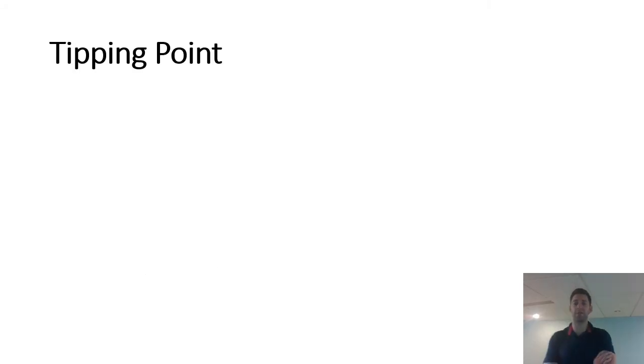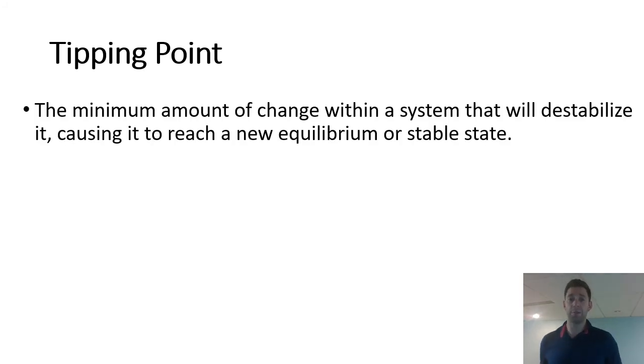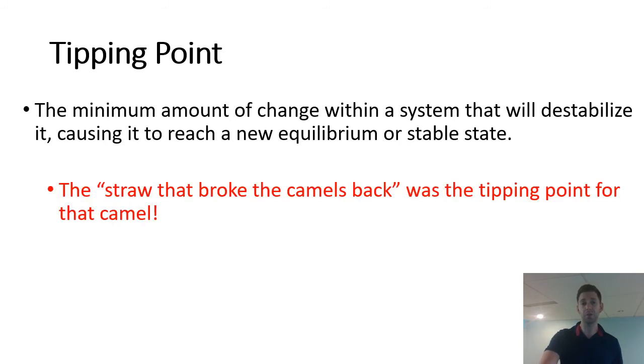OK, and then last part of content for this unit is the idea of tipping points. And this is connected to the concept of equilibrium. A tipping point is the minimum amount of change within a system that will destabilize that system, creating a new equilibrium or some new sort of steady state. So think back to that bowl with the grape on top. The smallest amount of touch that causes that grape to tumble off and reach some new equilibrium, that is considered a tipping point. And we often hear this in terms of climate issues, but also environmental issues in general. We think when it comes to species extinction, what's the tipping point? What is the minimum amount of change that's going to spiral out of control? What's the minimum amount of disturbance that is going to lead to some sort of chain reaction or some new normal, some new sort of equilibrium? If you've heard the term, the straw that broke the camel's back, that refers to tipping points.